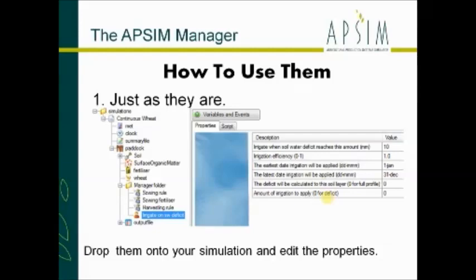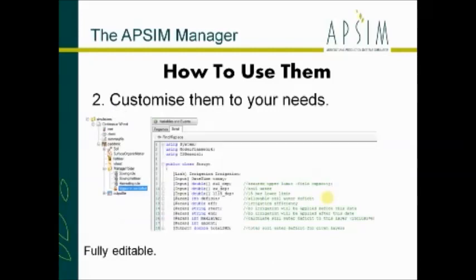They are, of course, a lot more powerful. You would have seen these before — this is just a standard continuous wheat simulation. There's a manager folder with three of the old rules: sowing rule, sowing fertilizer, and harvester — they've got the little blue farmer icon next to them. Then there's the new 'irrigate on soil water deficit,' which has a red icon indicating the new manager. The property screen looks more or less the same as in the old scripts: you've got your properties, where you set user-defined parameters, and the script tab, where all the code goes. To use them, you just drop them onto your simulation and edit the properties on the right.